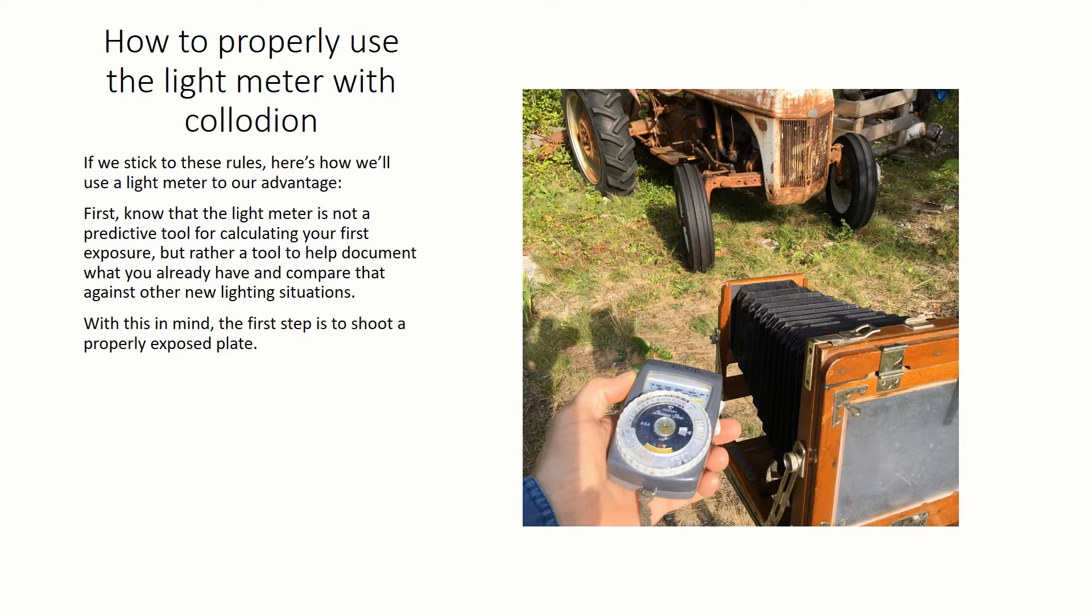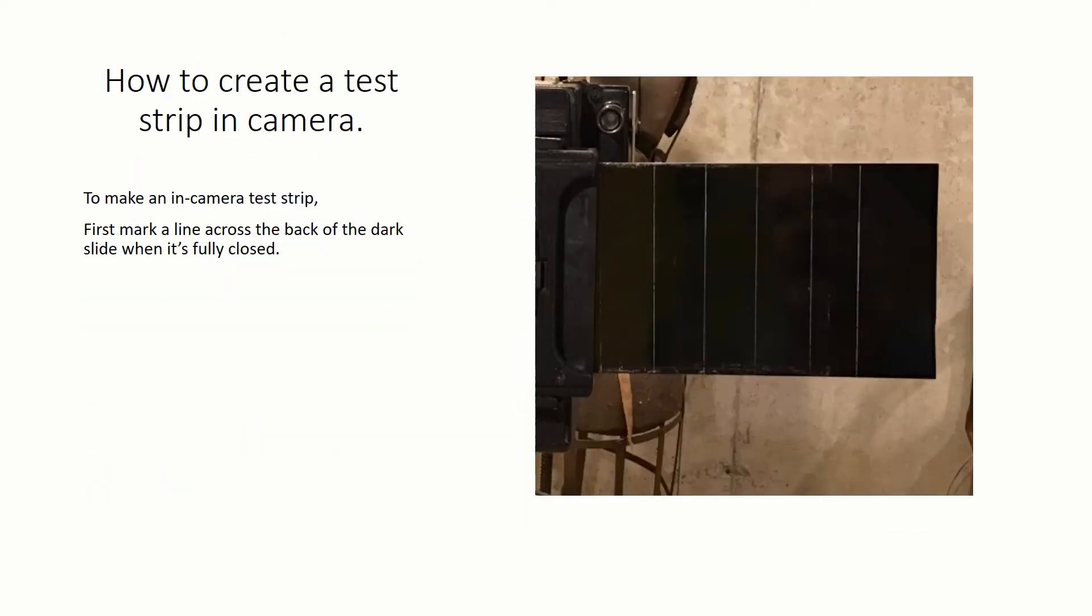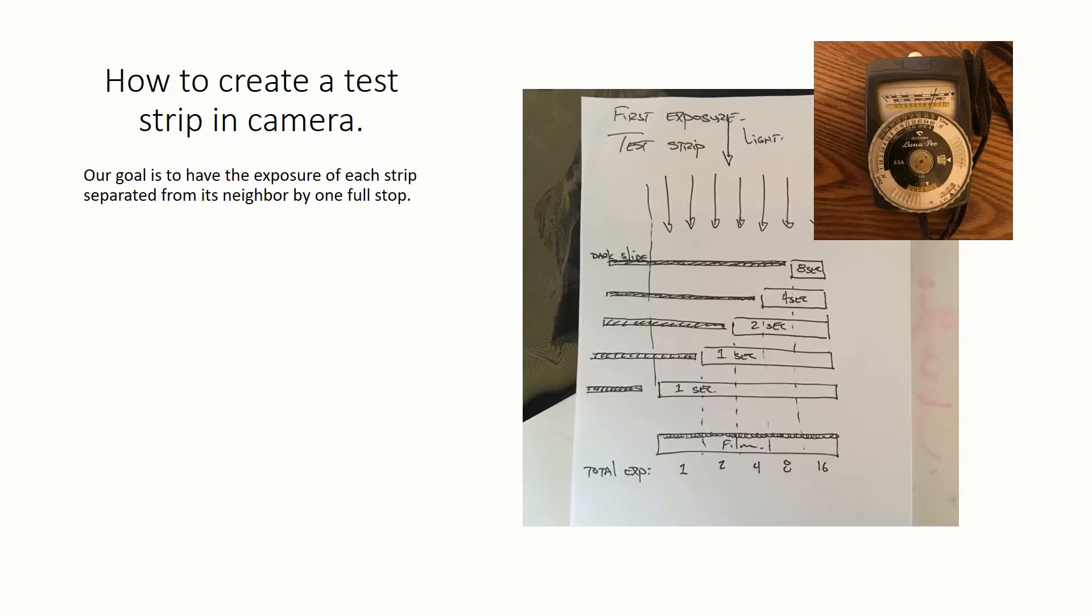With this in mind, the first step is to shoot a properly exposed plate. You can do this by trial and error, intelligent guessing gained through experience, or, my preferred method, shoot a test strip in-camera. To make an in-camera test strip, first mark a line across the back of the dark slide when it's fully closed. Then, mark another line when it's fully open. Measure the distance between these two lines, divide it into five equally spaced intervals, then draw lines across the dark slide at each point. This will make your test strips neat and uniform.